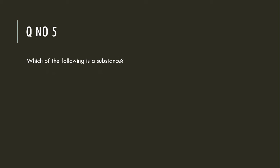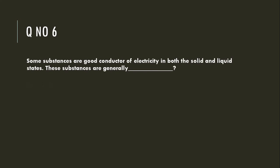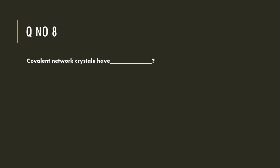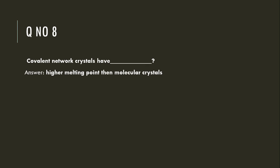Which of the following is a substance? Graphite. Some substances are good conductors of electricity in both the solid and liquid state — these substances are generally metallic substances. All of the following substances are crystalline except plastic. Covalent network crystals have higher melting points than molecular crystals.